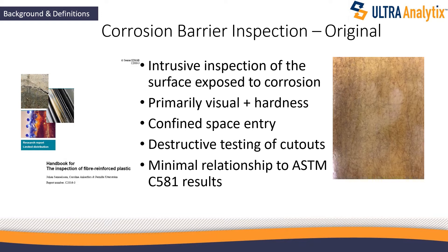Originally, corrosion barrier inspection was intrusive — it still is for the most part. What we do is go inside, say inside a storage tank, and ask: do we see any damage to the corrosion barrier? I'm showing a picture of a corrosion barrier here. We take a look at the color and say, does it seem to fit with an undamaged state of the resin? How hard is the surface? We measure that with something called a Barcol hardness tester. This always requires a confined space entry. We might take a cutout — cut a hole and place a nozzle in to repair it, which of course requires repair. There's almost no relationship of the results of this inspection to the ASTM C581 results.